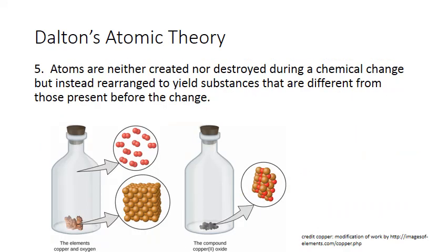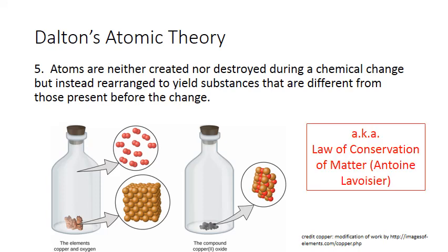Related to this is Dalton's last postulate. Atoms are neither created nor destroyed during a chemical change, but instead rearranged to yield substances that are different from those present before the change. You may recognize this as a restatement of the law of conservation of matter. Dalton based his theory on his observations as well as those of other chemists of the time, such as Antoine Lavoisier, a French chemist who stated the law of conservation of matter based on careful measurements of masses before and after a chemical change. Dalton simply restated it in terms of the atoms involved.